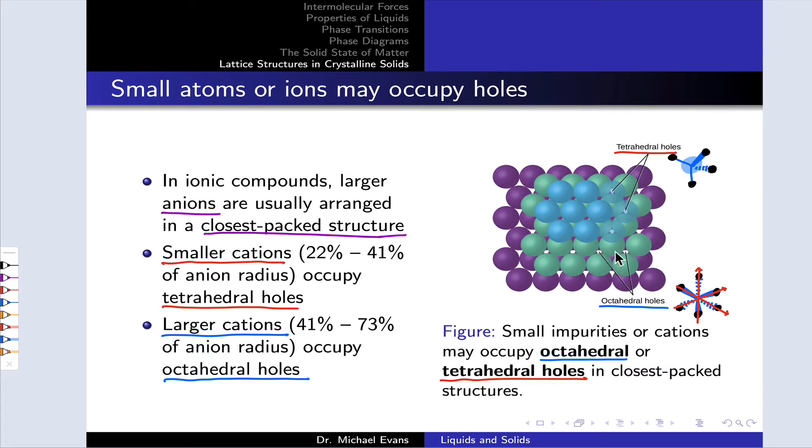For example, an octahedral hole with the triangle pointing down right here and a triangle of purple atoms pointed up below it. That's an octahedral hole.